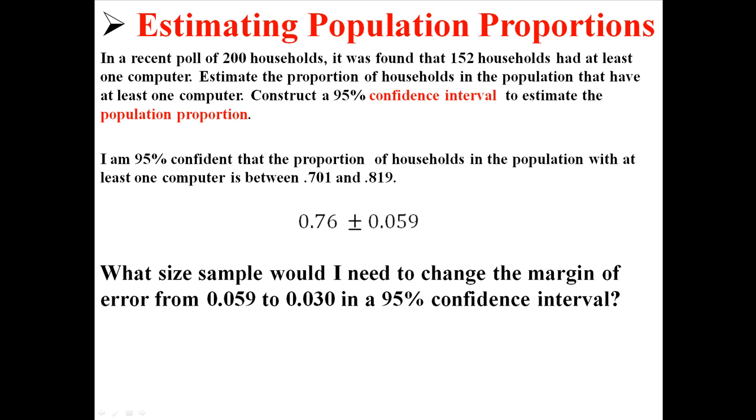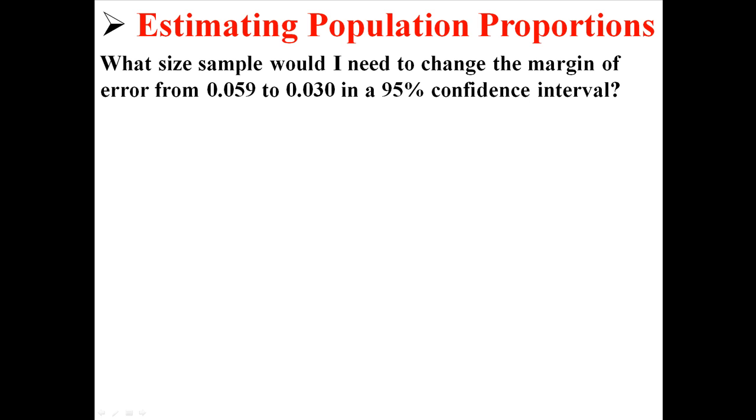But now we can ask, what size sample would I need to change the margin of error from 0.059 to 0.030 in a 95% confidence interval? We have this, and we can actually calculate that.